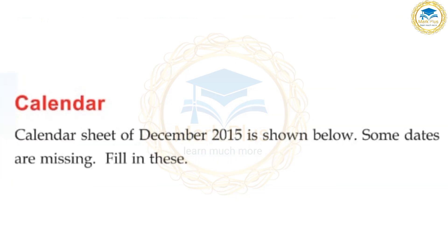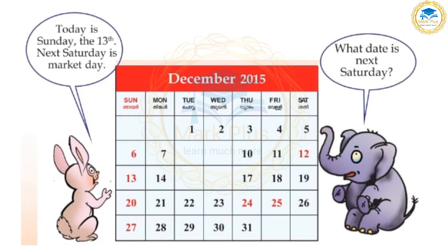A calendar sheet of December 2050 is shown. Some dates are missing — we'll fill in these. The first day shown is 13 — Sunday. 14 — Monday. 15 — Tuesday. 16 — Wednesday. 17 — Thursday. 18 — Friday. 19 — Saturday.